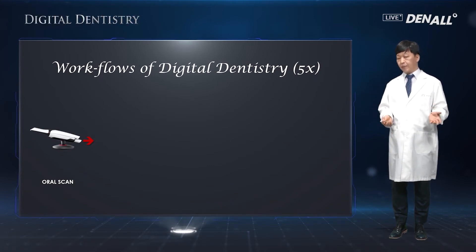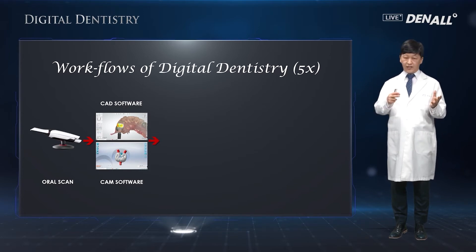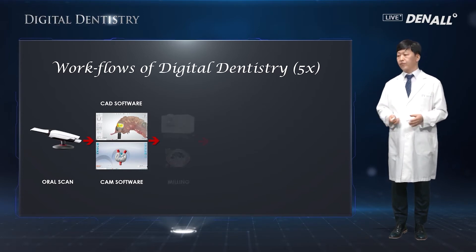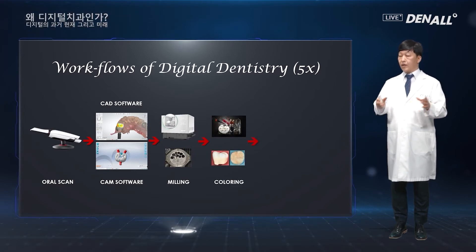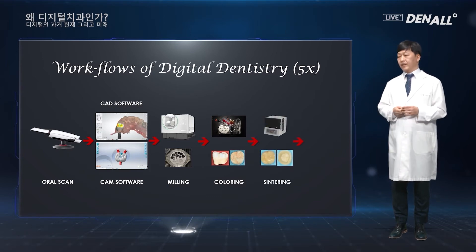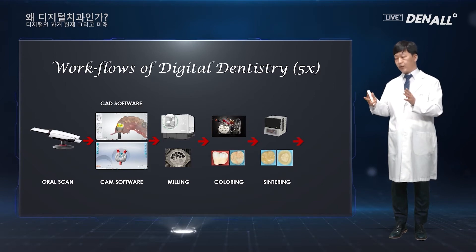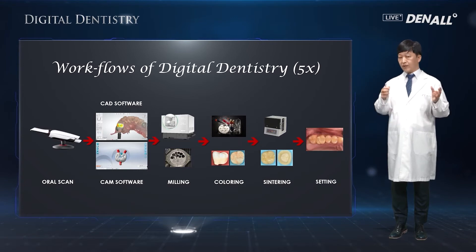If using a 5-axis machine to provide inlay or laminate, I take an oral scan and use CAD/CAM software to design it. Using a disc and 5-axis milling machine, I mill it out. If using zirconia for a crown, a coloring process is necessary. Once coloring is finished, the sintering process ensues for about 1–7 hours. Once the final crown comes out, I set it on the patient.